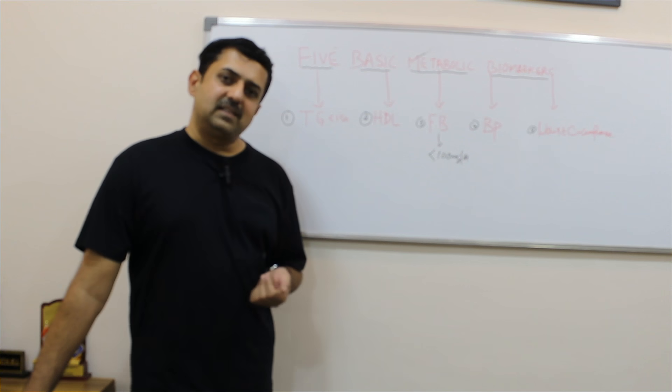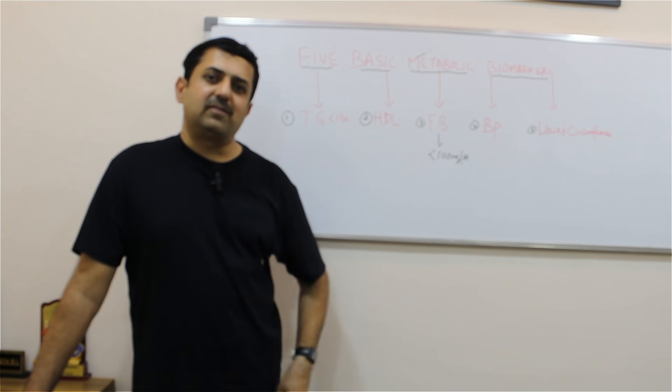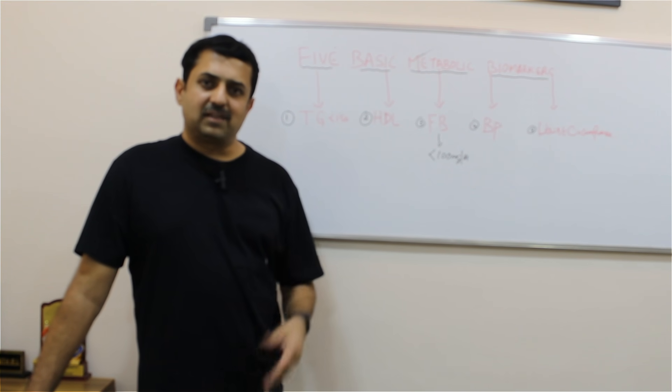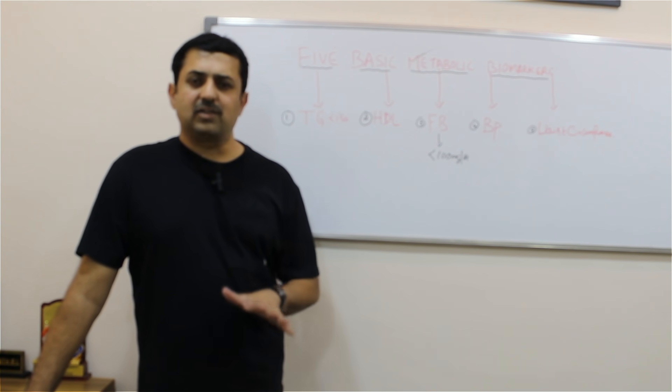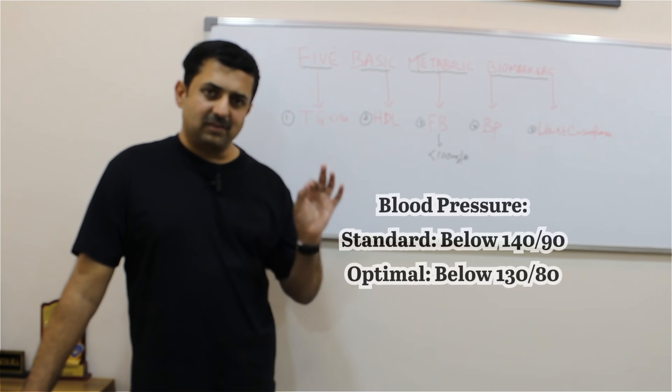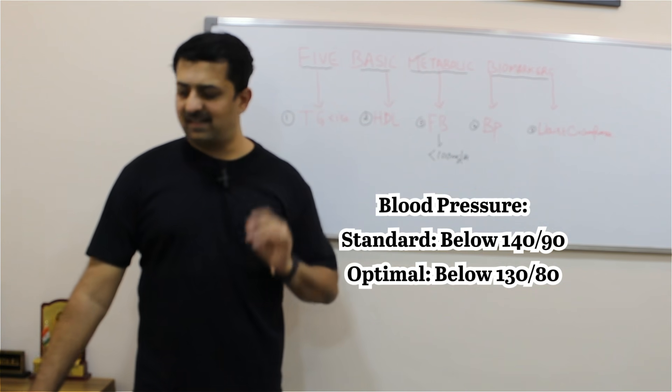People say, "I am 50, for me BP 150/80 is okay" and "I am 60 years, for me BP should be so and so." Nothing like that. For all adults, blood pressure should be less than 140 and less than 90. This is the standard.